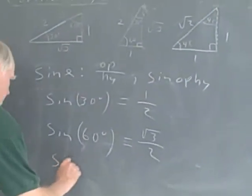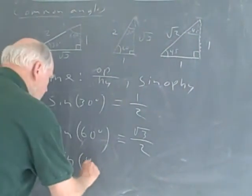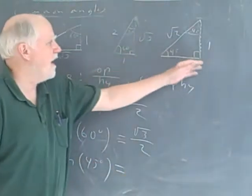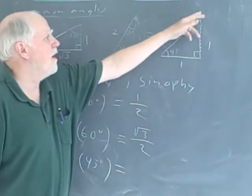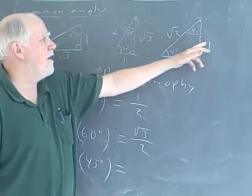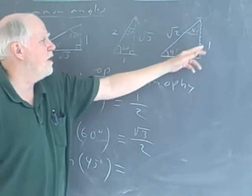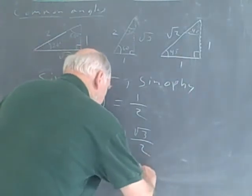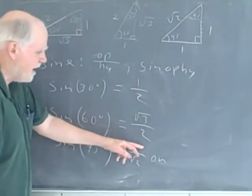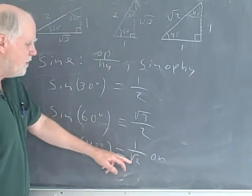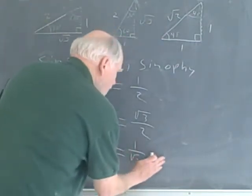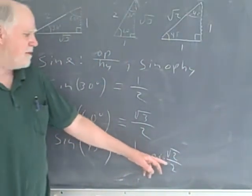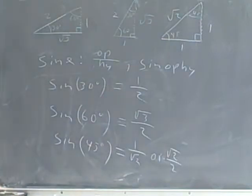Then I can look at the sine of 45 degrees. I go to my 45-45-90 triangle. Here's a 45-degree angle. I drop my altitude, and this is going to be 1, 1, square root of 2. So it's 1 over root 2. If we rationalize it — multiply top and bottom by square root of 2 — I'll get root 2 over 2. Sometimes one form is more convenient than the other depending on what you're doing, but they give the same number in your calculator.